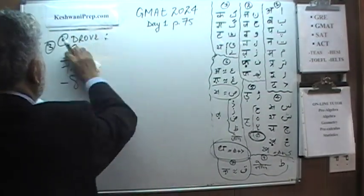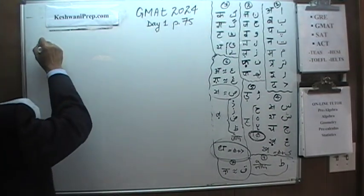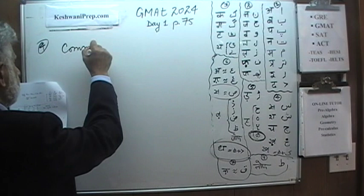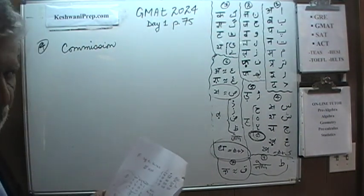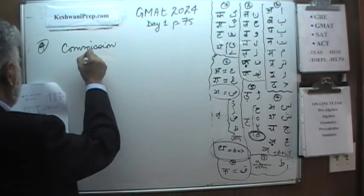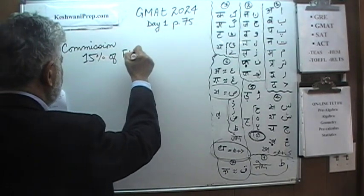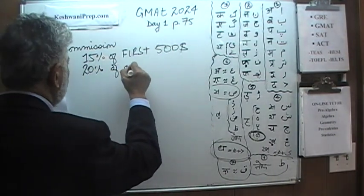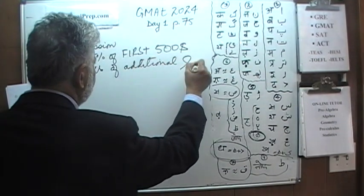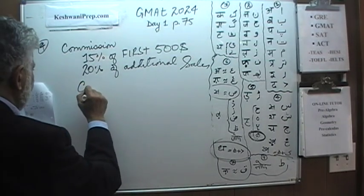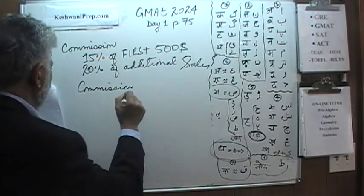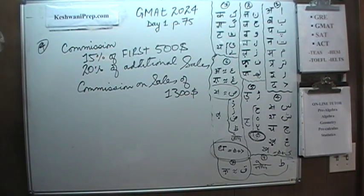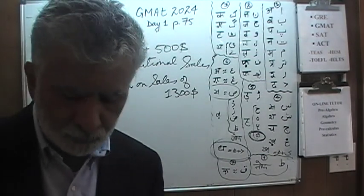Number four. We are told that we are going to earn a commission — commission has two M's and two S's. The commission structure is: 15% on the first $500 of sales, and 20% on any additional sales beyond that. The question is: what is the total commission on sales of $1,300? Pause the video and do it yourself, then compare your work.